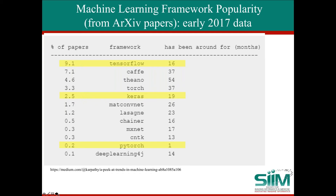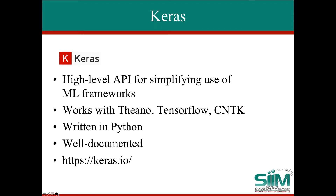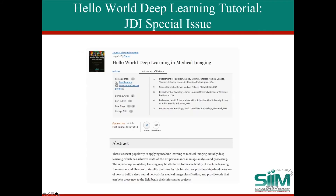A lot of this popularity is because they're well-documented, they all use Python which is a very friendly and popular language for machine learning, and they're very flexible — they can work with text and images. In this tutorial, I'm going to go over Keras, which is a high-level API that simplifies the use of machine learning frameworks. It works with Theano, TensorFlow, or CNTK, is written in Python, is very well documented, and there's a link to Keras if you want to download it.